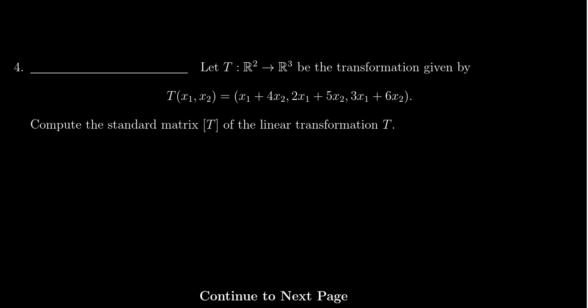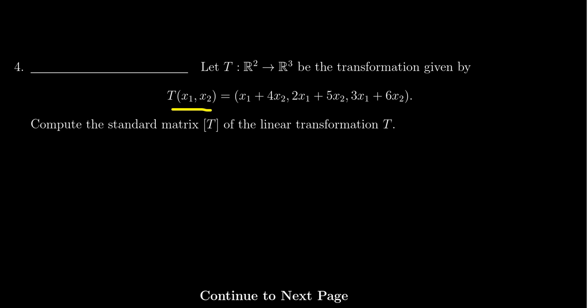We are given a linear transformation T that goes from R² to R³, and is given by the following rule: T(x₁, x₂). The first coordinate will be x₁ plus 4x₂. You get 2x₁ plus 5x₂ for the second coordinate, and 3x₁ plus 6x₂ for the third coordinate. So what we have to do is